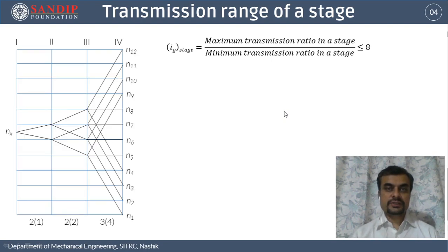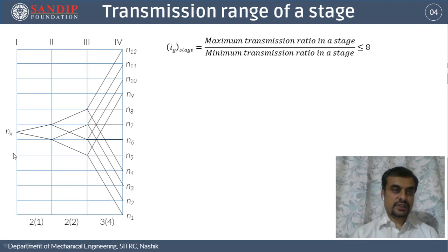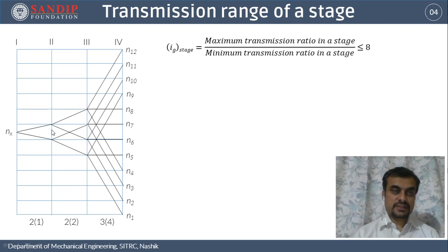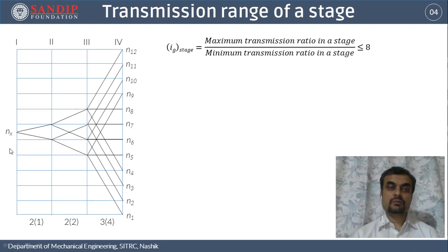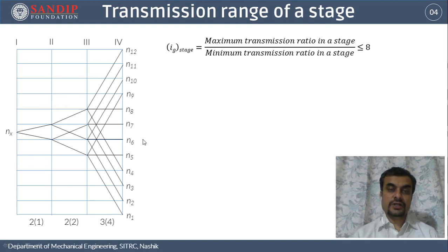Let us calculate the I-stage value for the first structural diagram, stage by stage. In the first stage, the input speed is Nx, which lies between N6 and N7, and we have two output speeds: N6 and N7. Note that Nx is not at the midpoint because the y-axis is a logarithmic scale. Therefore, N7/Nx = φ^0.5 and similarly Nx/N6 = φ^0.5.